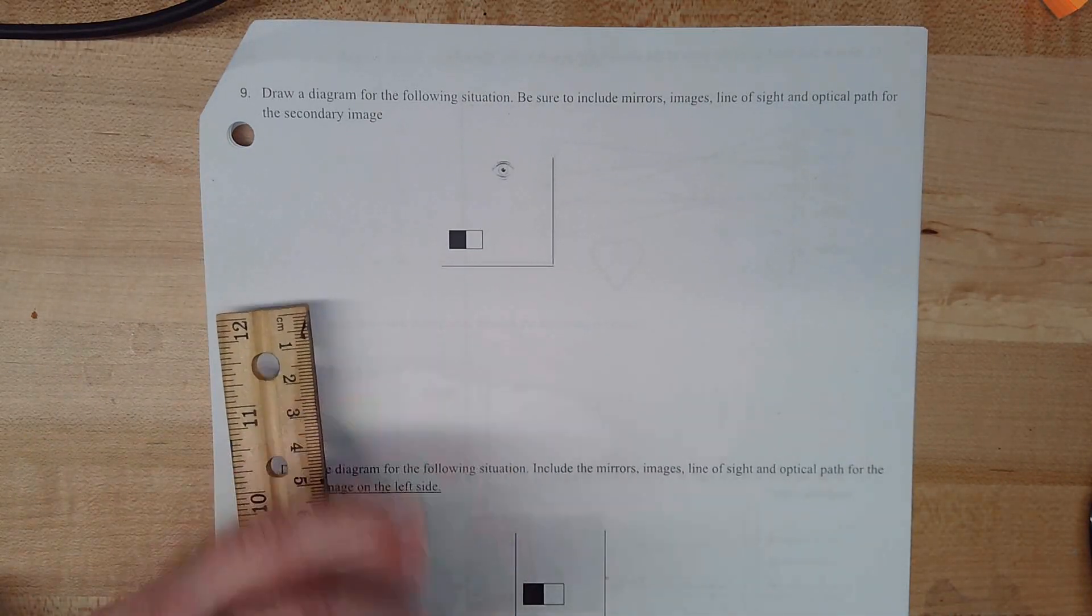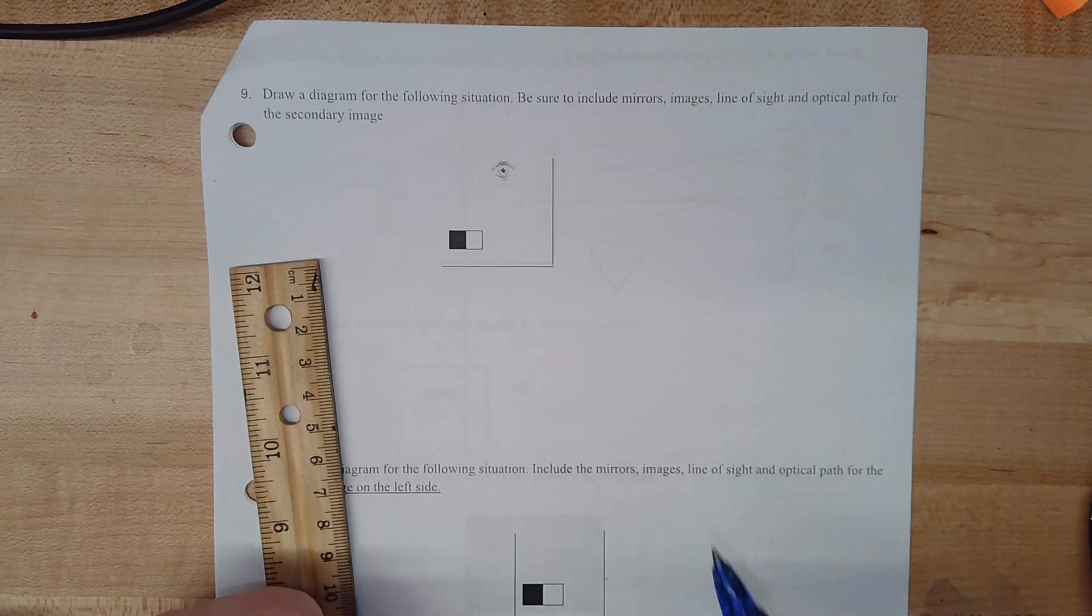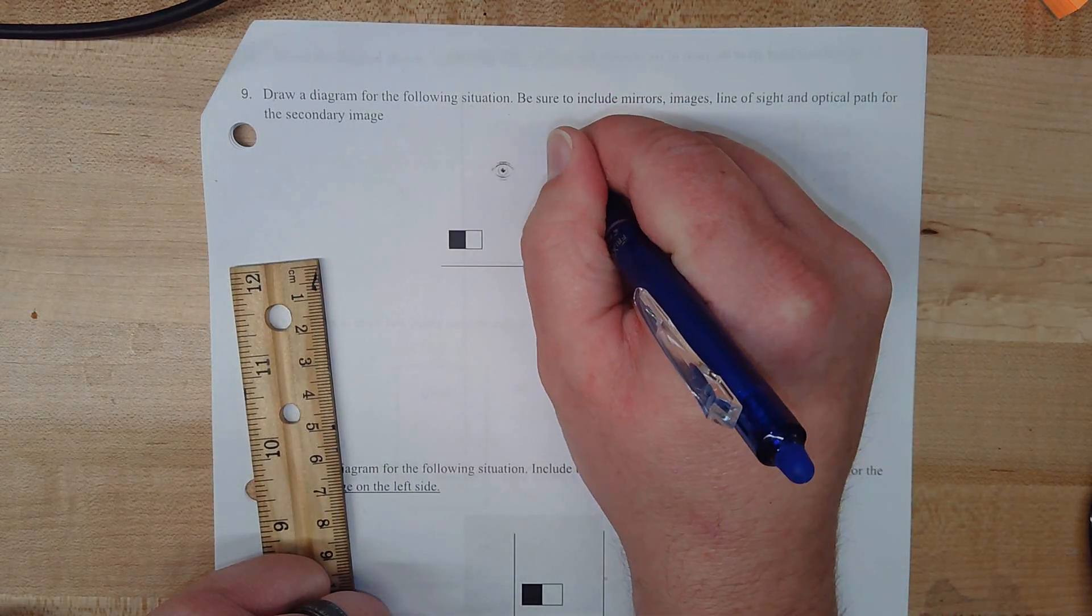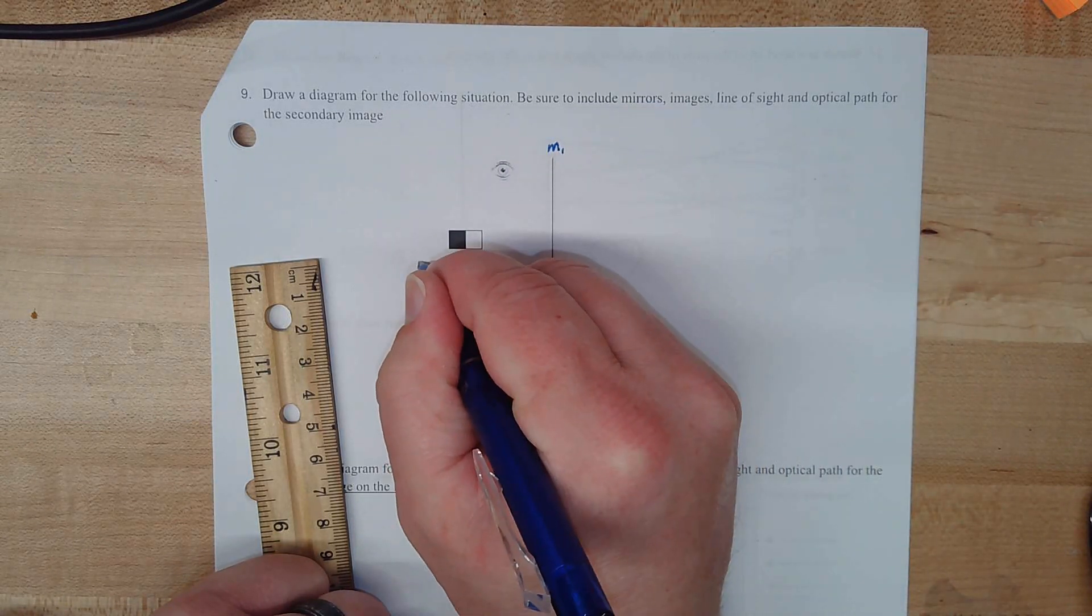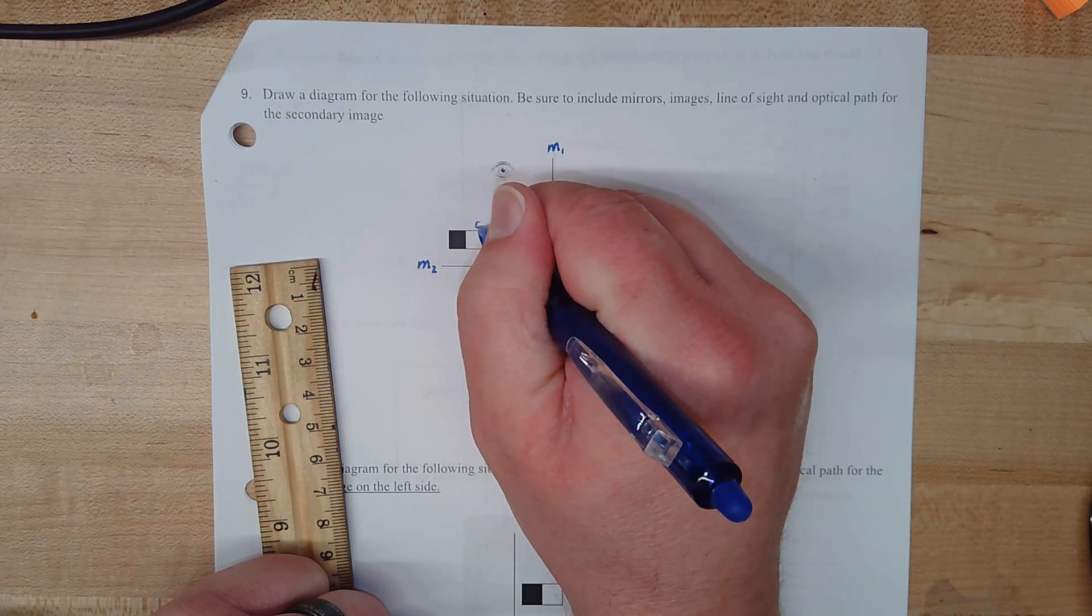So the first thing we do when we're drawing mirror diagrams, or at least the first thing I do, is I label everything. We're going to label this mirror 1, this mirror 2, and this our object O.